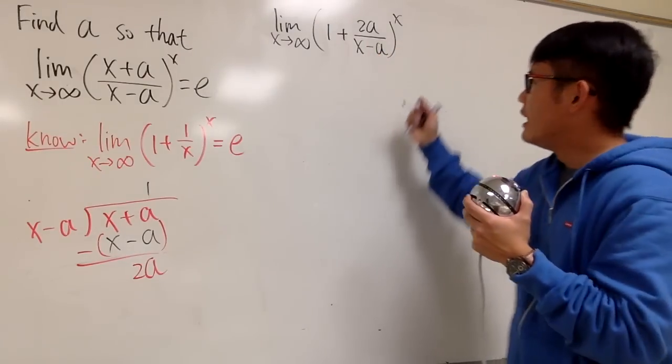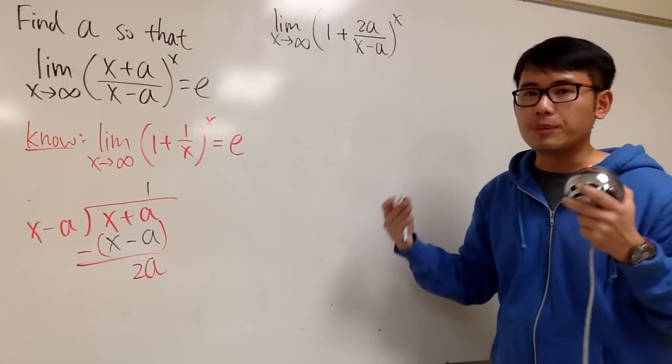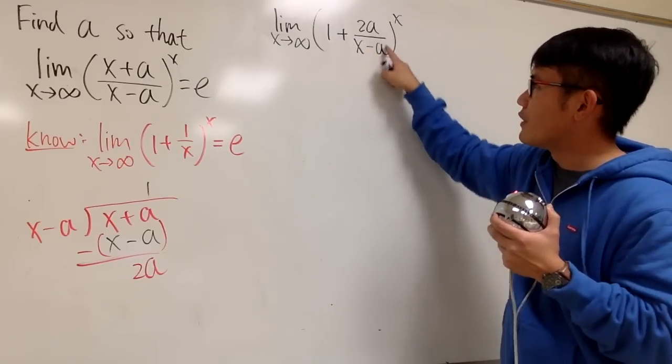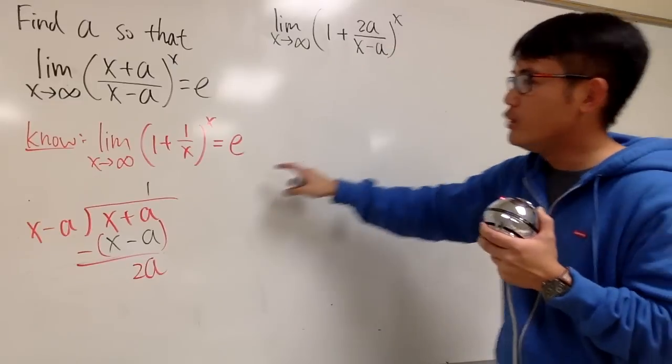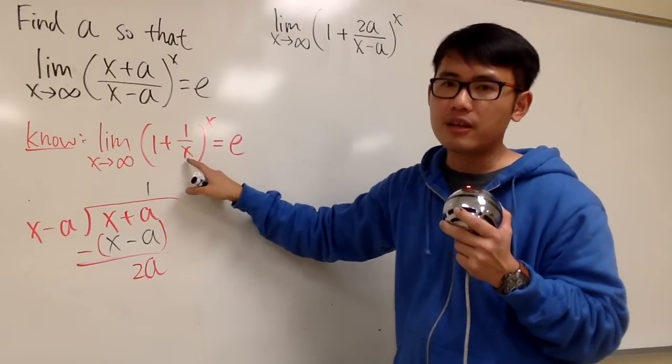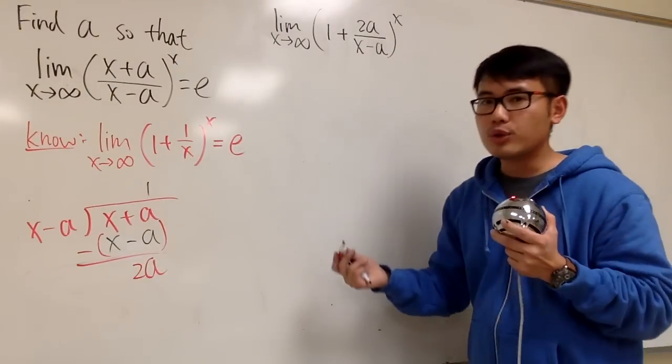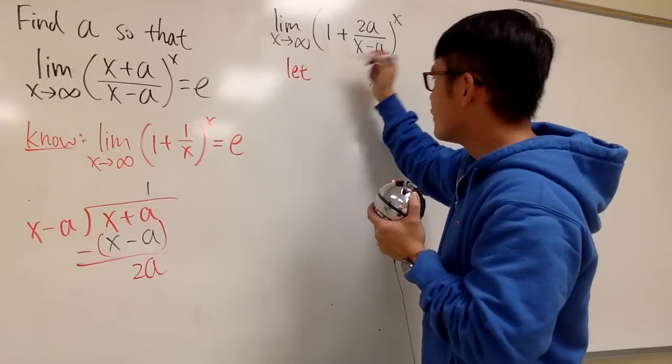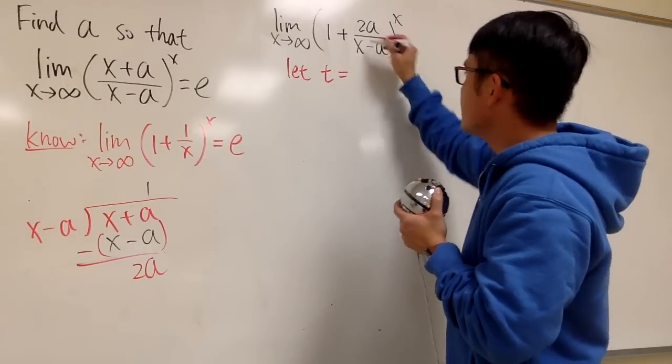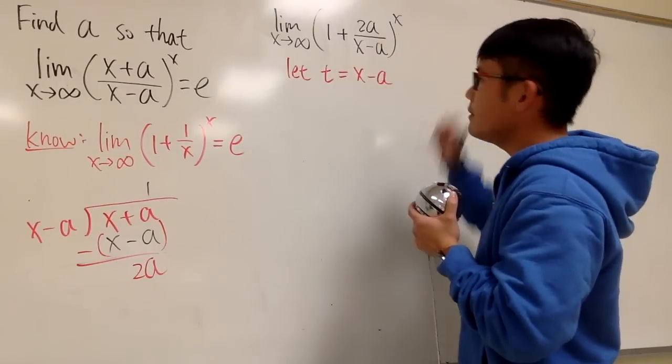And I can just say a variable. Seriously. Let me just name this to be a variable. Let's just call that to be t. Because I just want to have a variable down below here, so that it will match with this form much better.